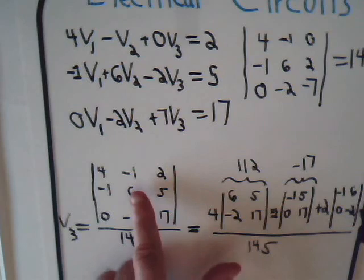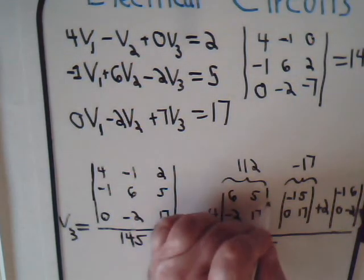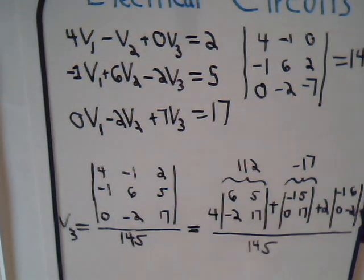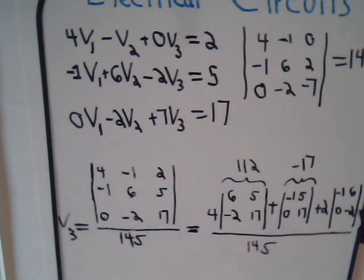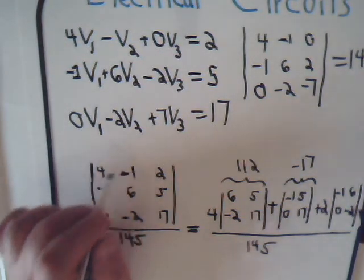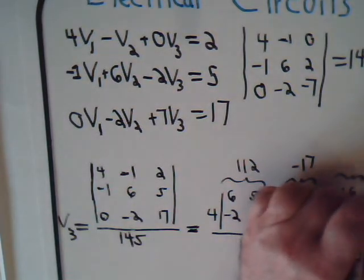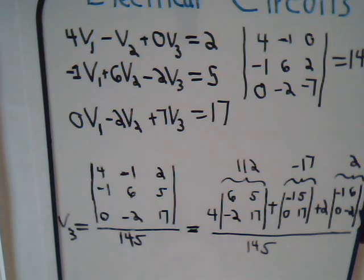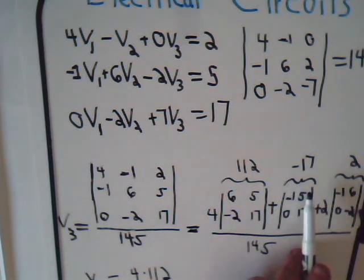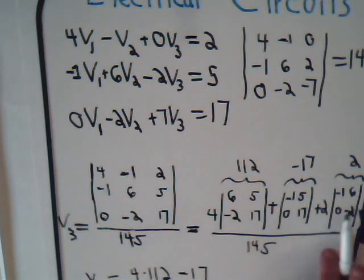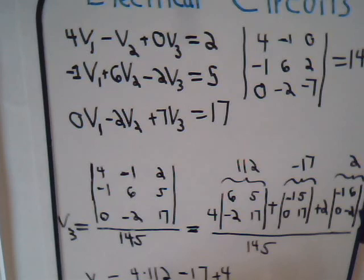And actually, no, this is plus 1, this is a minus 1 here, so this is just simply, again, when you're monkeying around these determinants, it's easy to make a silly mistake along the way, so be forever vigilant. Okay, and here we have, this is negative 2 times negative 1, that's positive 2 minus 0, so that has a value of plus 2. So finally, we have V3 equals 4 times 112 minus 17, 2 times 2 is 4, plus 4 divided by 145.